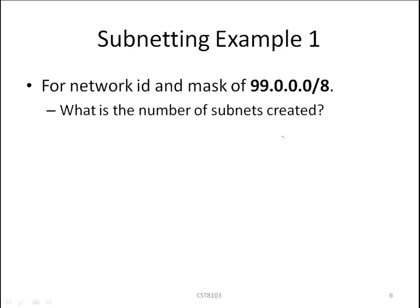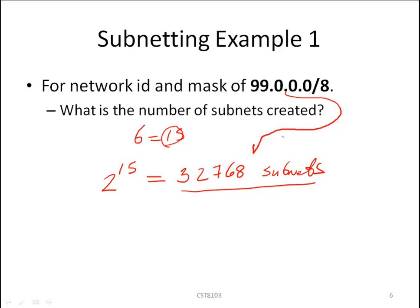We've determined in our previous slide that B was equal to 15. Therefore what is the number of subnets we've created? It is 2 to the 15 which equals 32,768 subnets. So by borrowing 15 bits we have subnetted this address into 32,768 new networks.